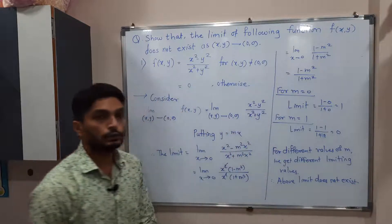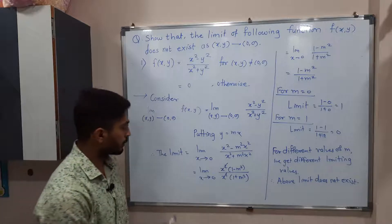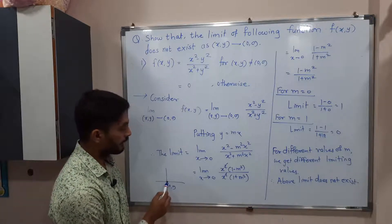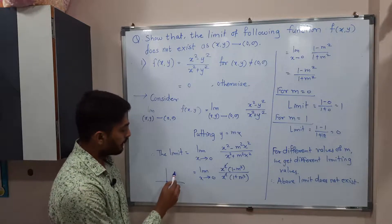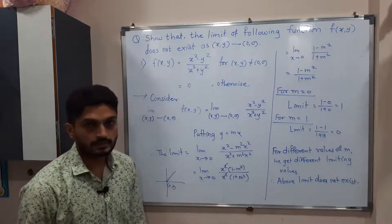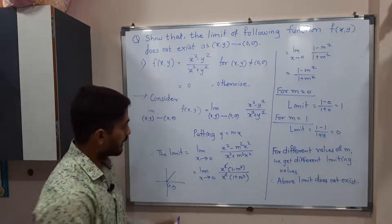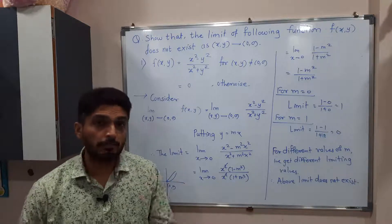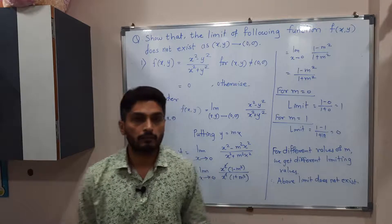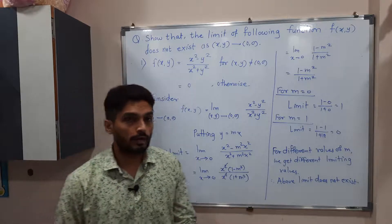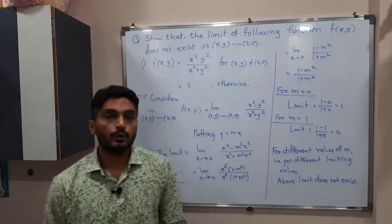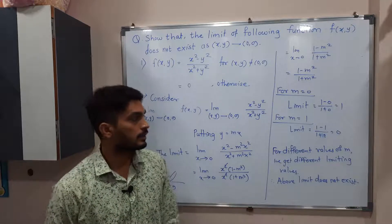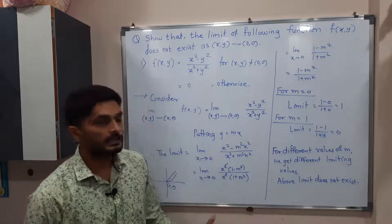What is the geometry behind it? We have to reach (0,0). If you follow a straight line, then the answer is different, and if you follow the path of a parabola, then the answer is different. That means if you change the path, we are getting different values of the limit — which should not happen if the limit exists. So therefore the limit definitely does not exist.